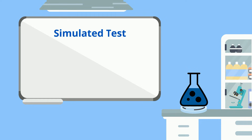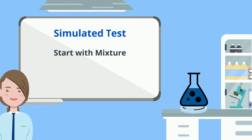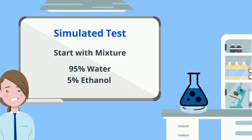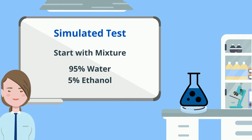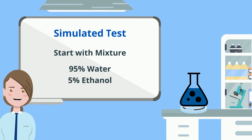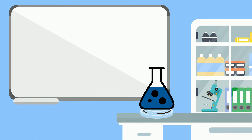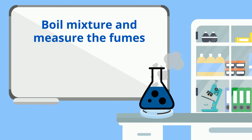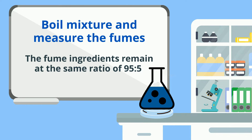For demonstration purposes, let's suppose we test an unscientific mixture that is 95% water and 5% ethanol. If we boil the mixture and measure the fumes coming off, we would notice that the mixture of the ingredients is still at the same 95 to 5 ratio.